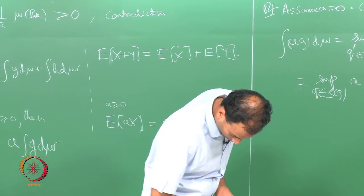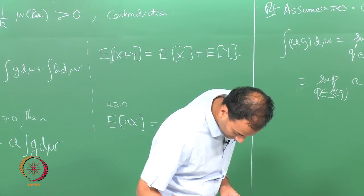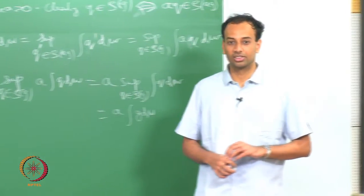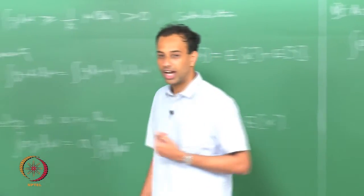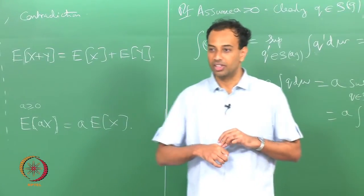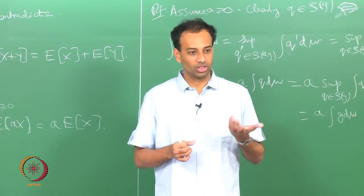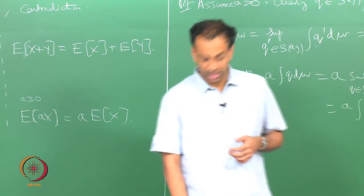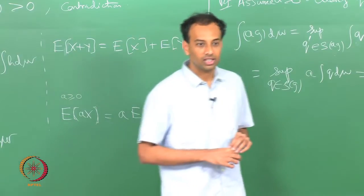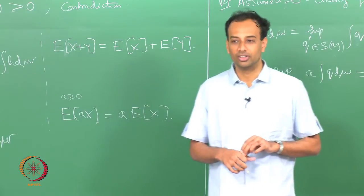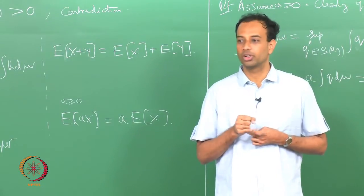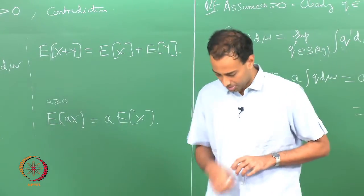I am done with the basic elementary properties of integration. The properties that remain are the more fundamental theorems of integration — there is just one fundamental theorem, the monotone convergence theorem, which is regarded as the cornerstone of integration theory. We will also do the dominated convergence theorem, which follows as a corollary, and mention Fatou's Lemma, though it is not in the syllabus.